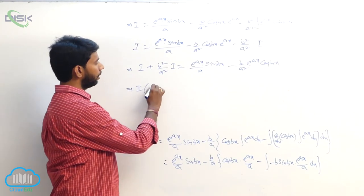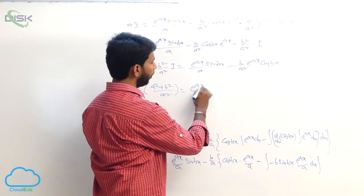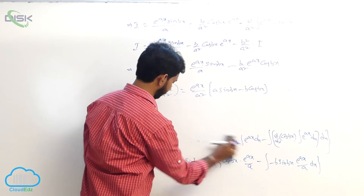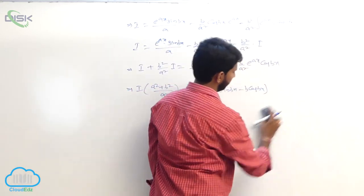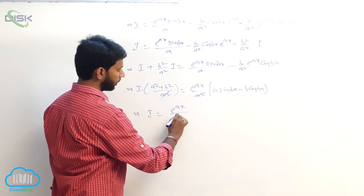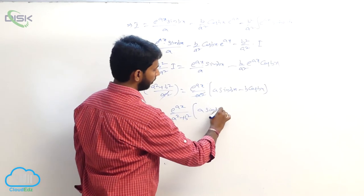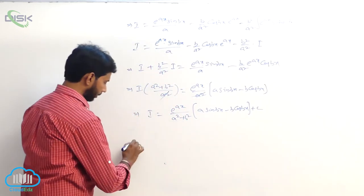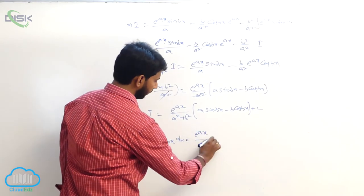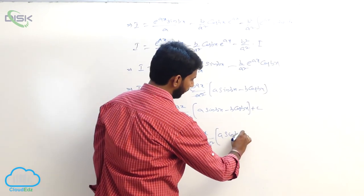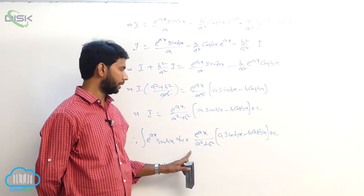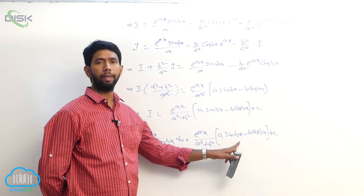After taking LCM: i into a square plus b square by a square is equal to e power ax by a into a sin bx minus b cos bx. Cancelling a square: i is equal to e power ax by a square plus b square into a sin bx minus b cos bx plus some constant. Therefore integral of e power ax into sin bx dx is equal to e power ax by a square plus b square into a sin bx minus b cos bx plus some constant.